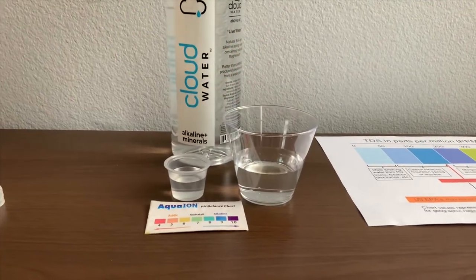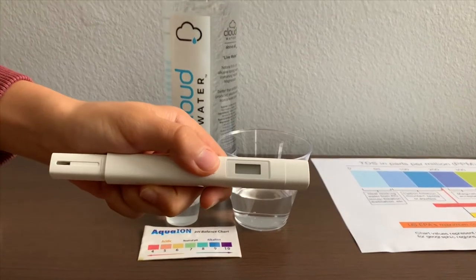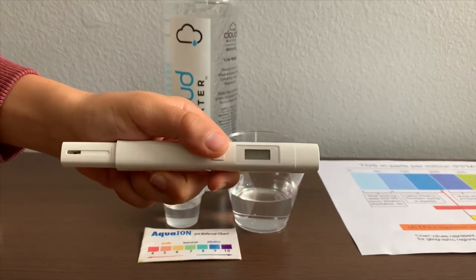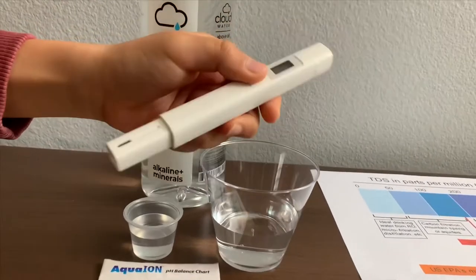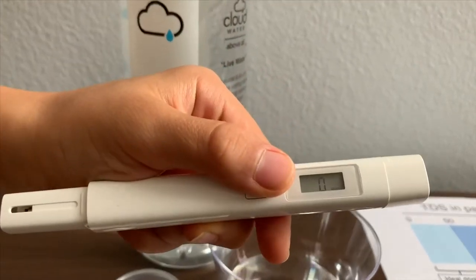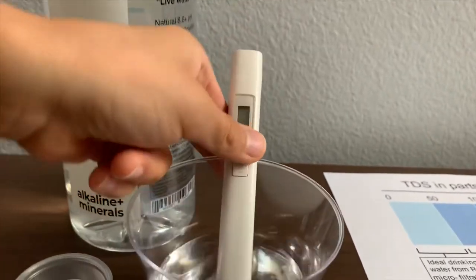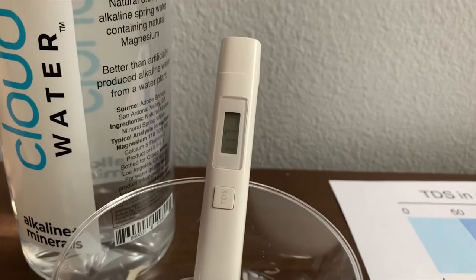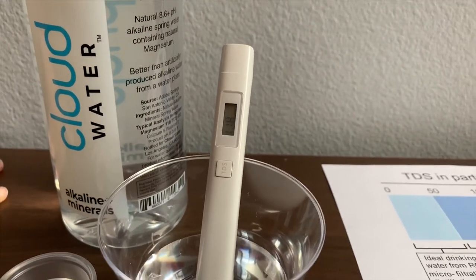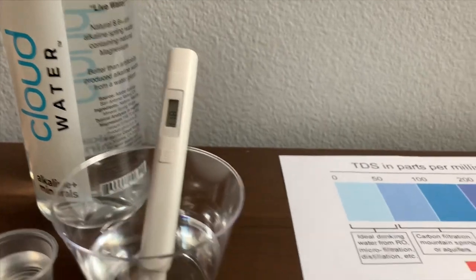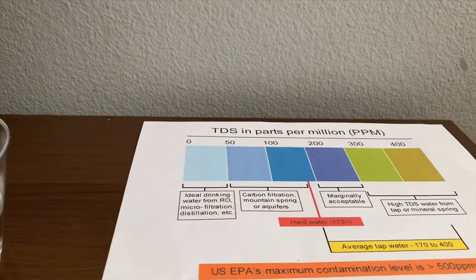First, let's test the TDS level. If you want to buy this TDS tester, check the link down below. Turn on the TDS tester, make sure it says zero, and put it in. 118. That is mountain spring water or aquifers.